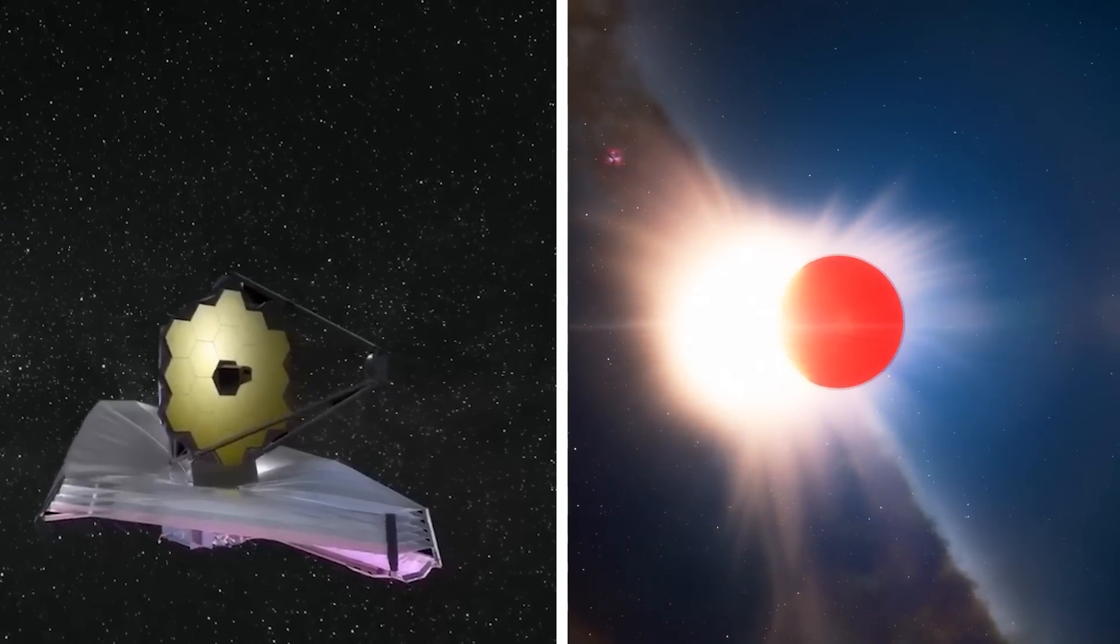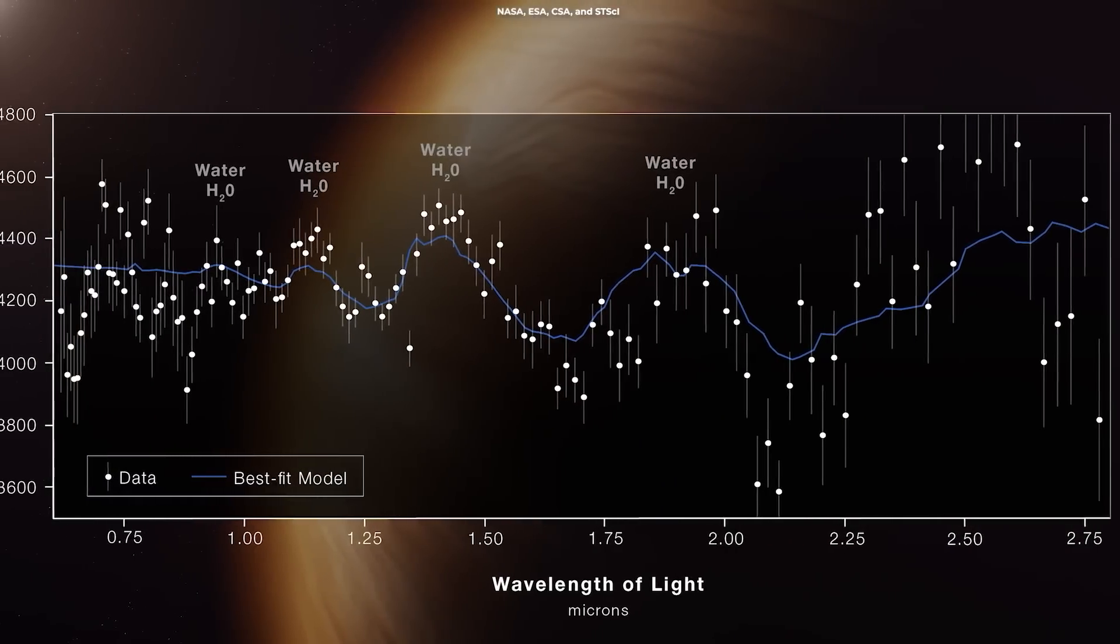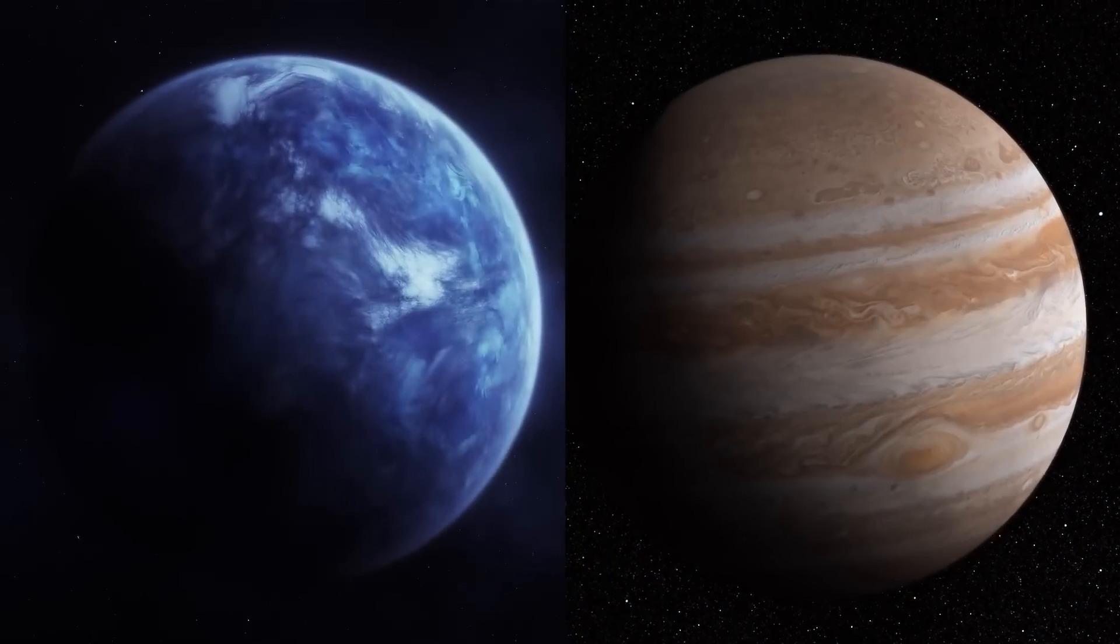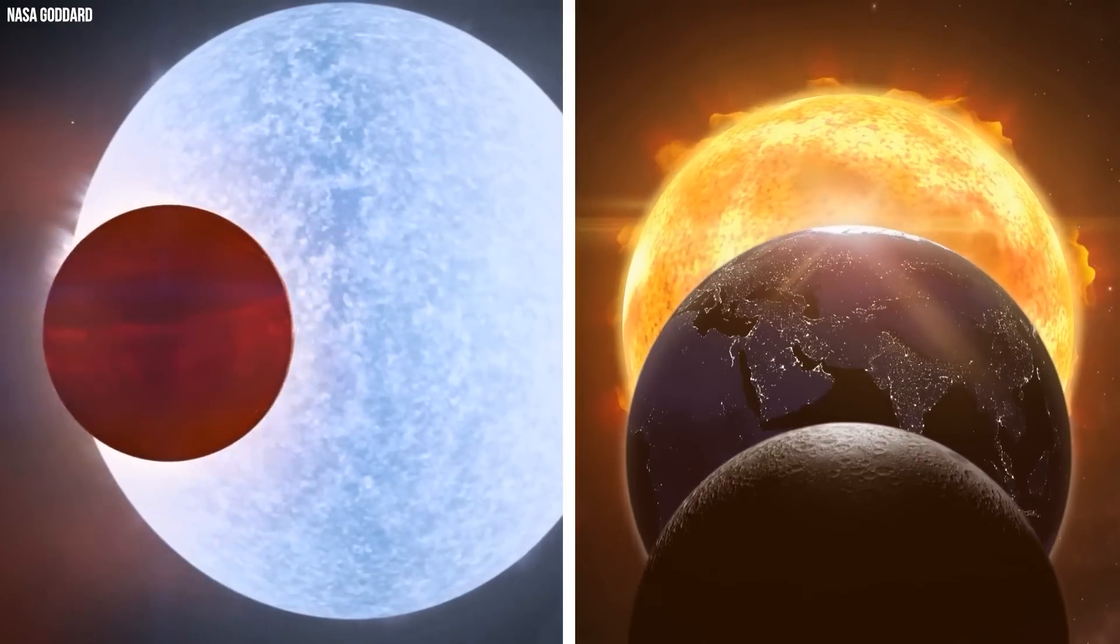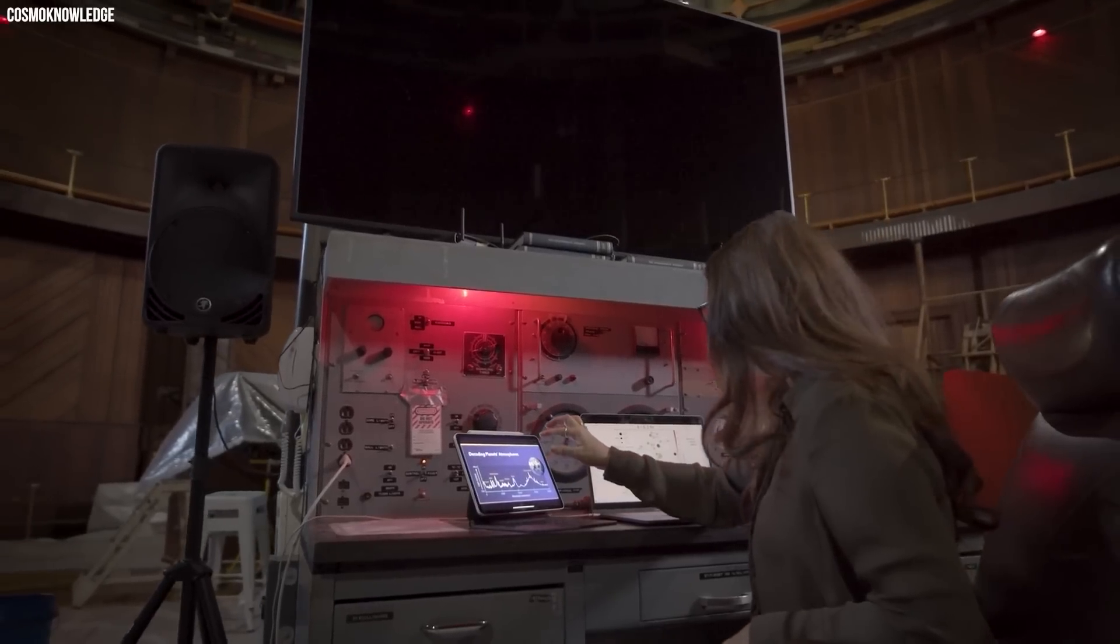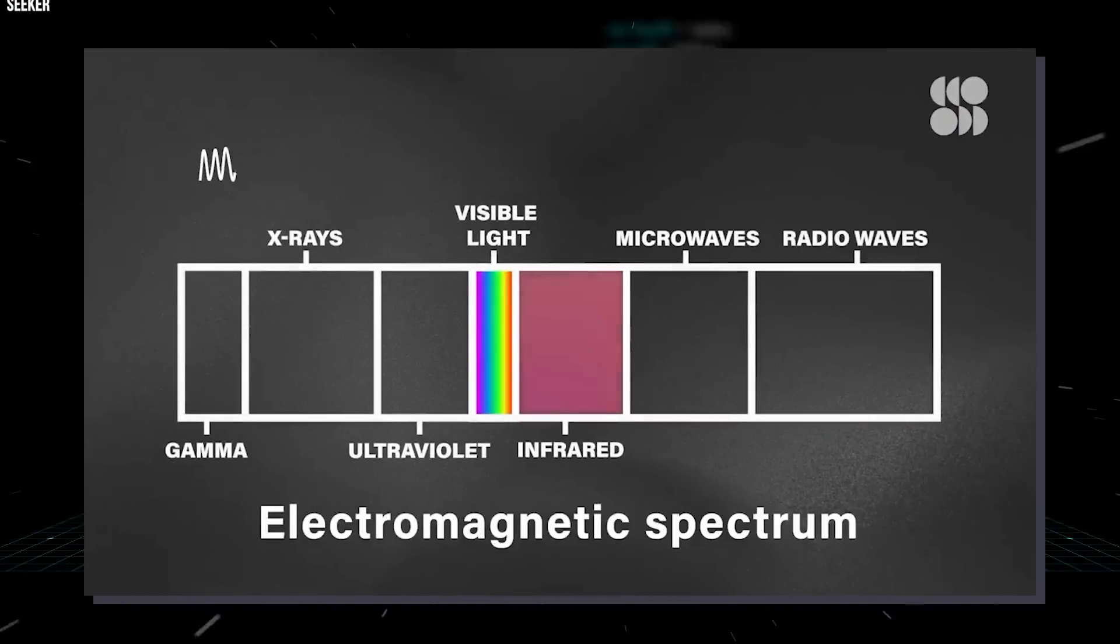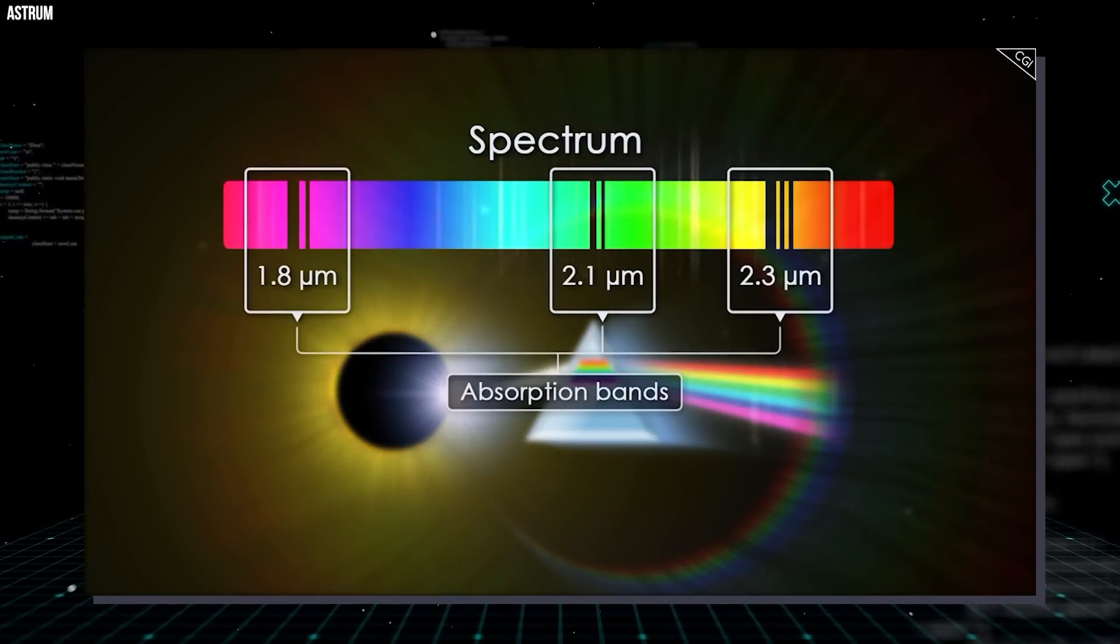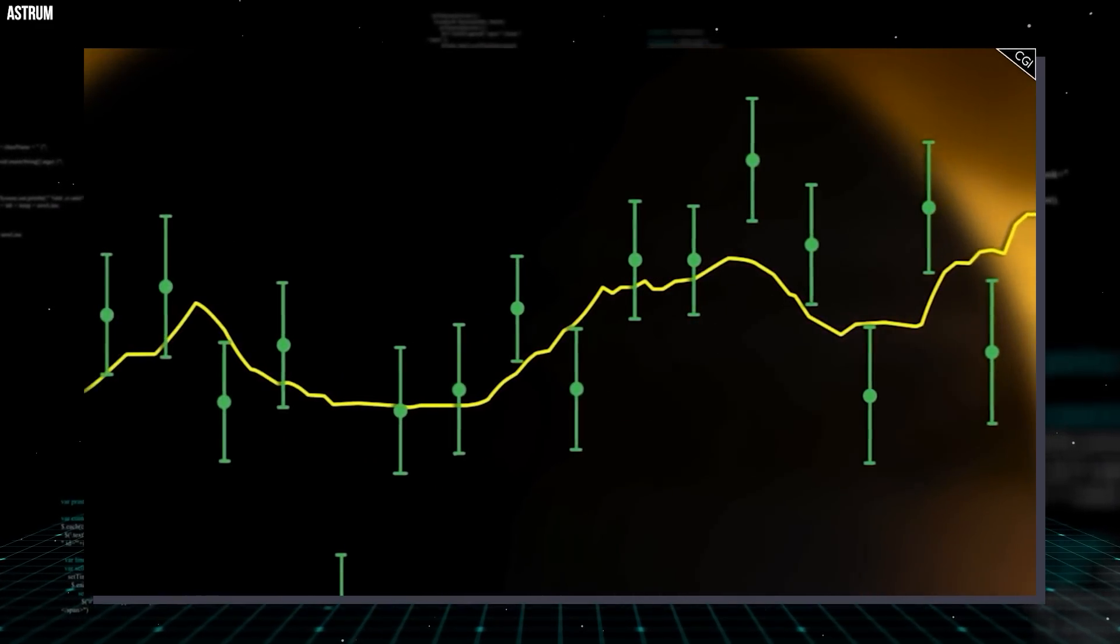The NEARIS, mounted on JWST, measured the light coming from WASP-96b for around six and a half hours and plotted the data obtained on a graph, and according to this data, there might be water on this planet. This mostly gaseous planet measures nearly half the mass of Jupiter. It orbits its home star so closely that one year on this planet is equivalent to only 3.4 days on Earth. This quick orbital period is extremely important as it is the reason why astronomers were able to study how molecules on this planet absorb and then re-emit light from its home star. By breaking down this spectrum of light into its constituent wavelengths, scientists were able to figure out the type and quantity of elements present in the atmosphere of this planet. Graphical representation of this data helped scientists conclude that there is water on WASP-96b.